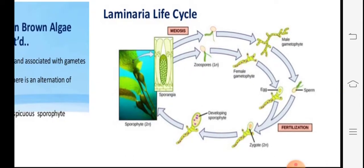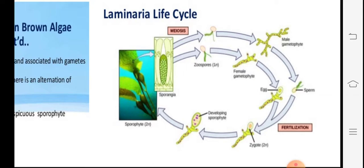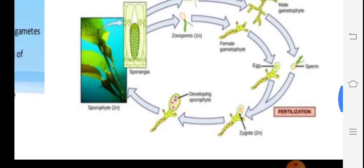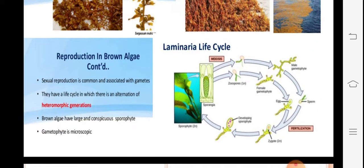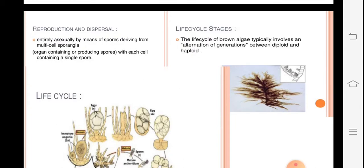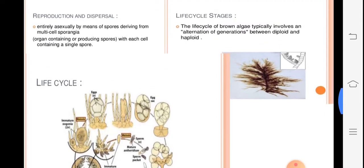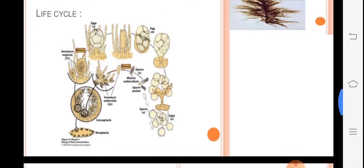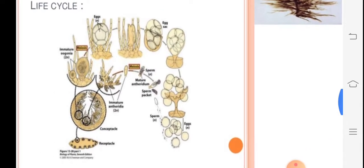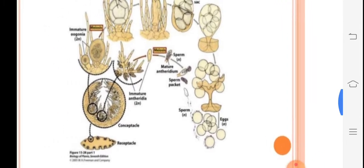To remember the Laminaria life cycle: Laminaria shows a sporophytic plant body that is diploid; it develops antheridia and oogonia. Meiosis takes place and zoospores develop, which germinate and form a thallus — one male gametophyte and one female gametophyte. Sperm and egg develop, fertilization occurs, forming a zygote, and the zygote germinates directly to form the sporophyte.